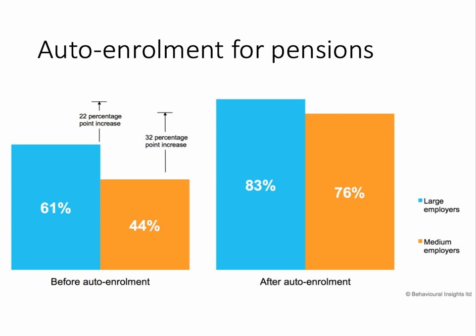A good example is auto-enrolment in pensions. In October 2012, UK employers started automatically enrolling their workers into a pension scheme, starting with the largest employers — 250 people or more — with the scheme covering all employers by 2018. It seems to have been much more effective than traditional interventions such as tax or subsidy, with a big increase in the number of workers covered by auto-enrolment.